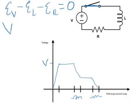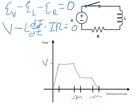Let's plug in what these voltages are, and we get V minus LDI DT minus IR equals zero. One thing to notice, very important, is that the voltage drop for the inductor is proportional to the rate of change of current.